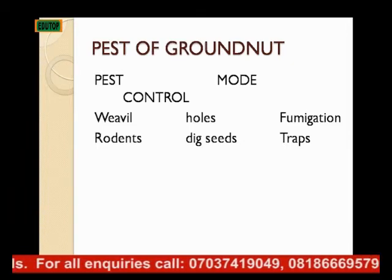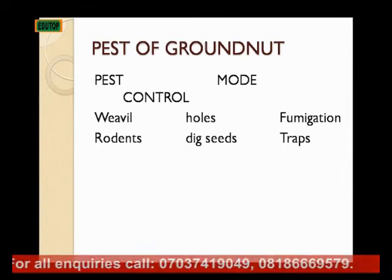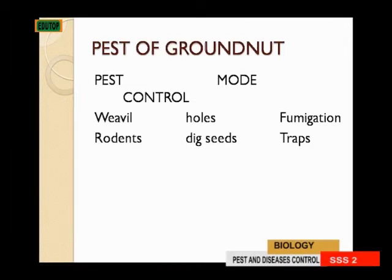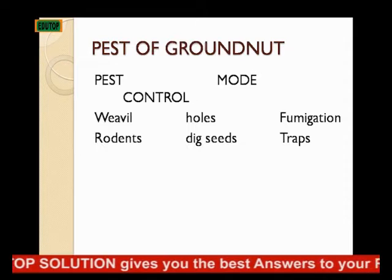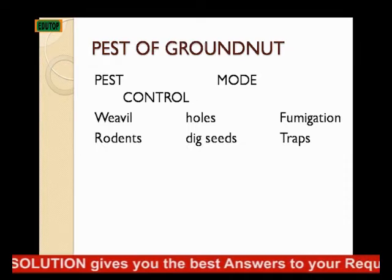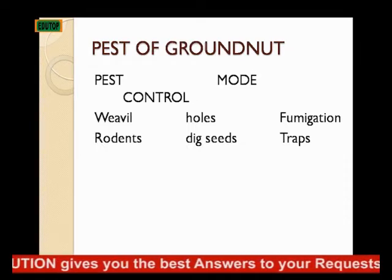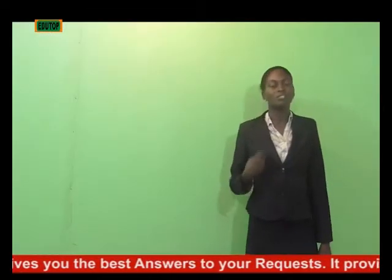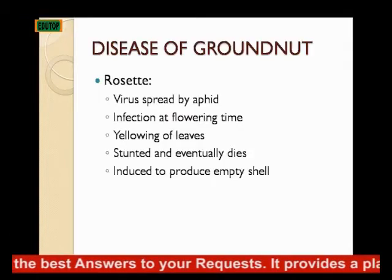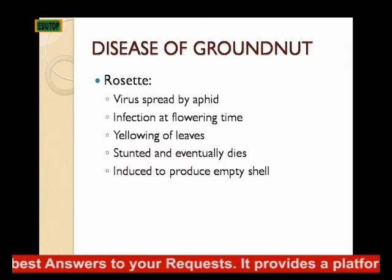Rodents such as rats and rabbits dig up the seeds in the soil. When the seeds are dug up, there is nothing that will germinate. So you can prevent rodents by using traps. The disease of groundnuts is rosette.